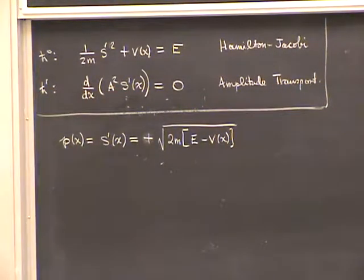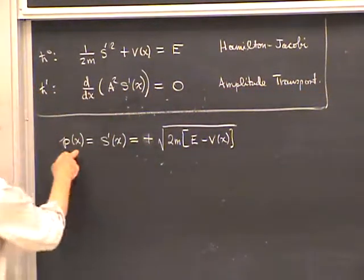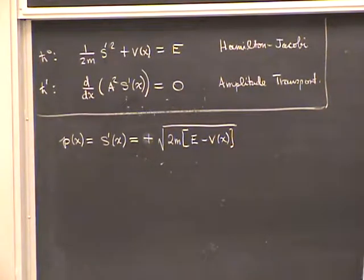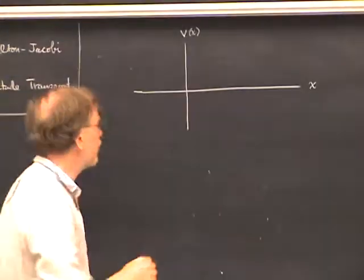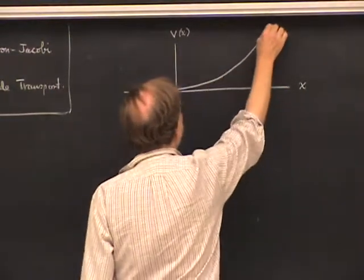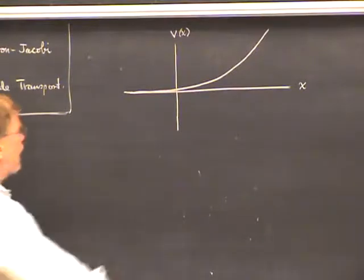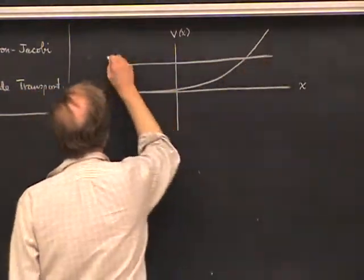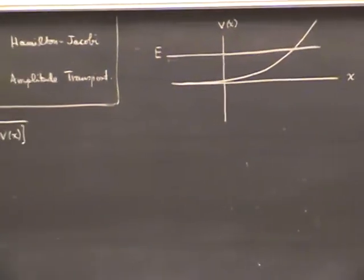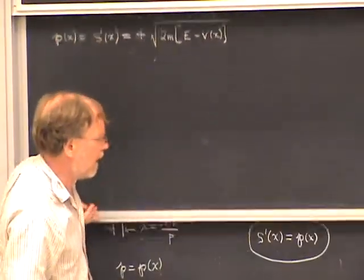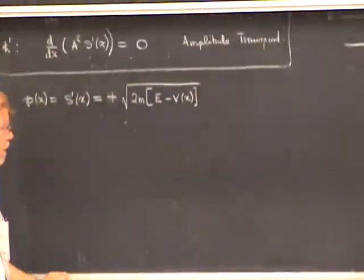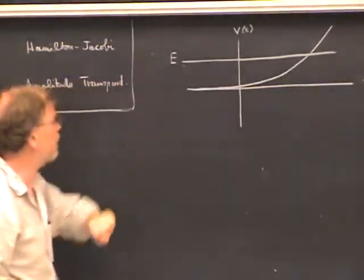Let's get a classical interpretation of this. Suppose we have a one-dimensional potential that is essentially zero for large negative x but rises as we move into positive x, like going up a mountain. Let's say the energy E looks like this. Classically, a particle coming in from negative x would be a free particle, but as it comes in it starts to feel the potential and slows down. It comes to a standstill when kinetic energy is zero — this is the classical turning point, which I'll call x_T. Then it reverses and comes back.